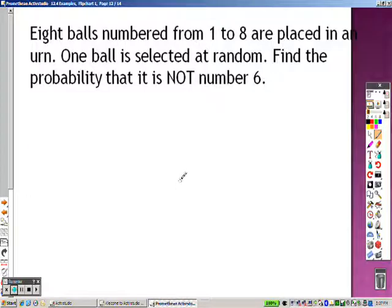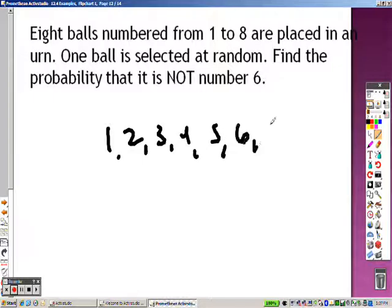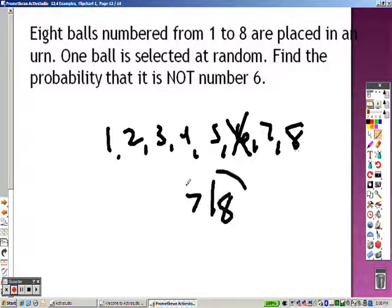Eight balls, number one, three, eight are placed in an urn, one ball is selected at random, find the probability that it is not number six. There's one, two, three, four, five, six, seven, and eight. That's the probability that's not number six. One, two, three, four, five, six, seven out of eight. That's not the number six.